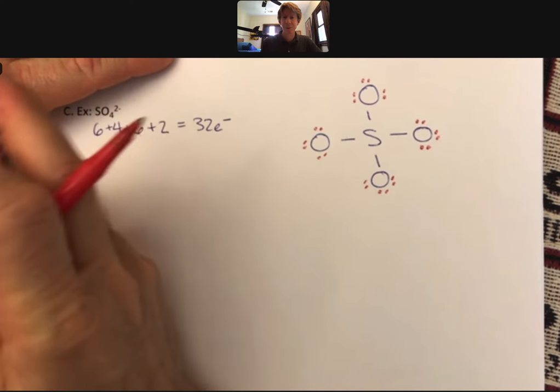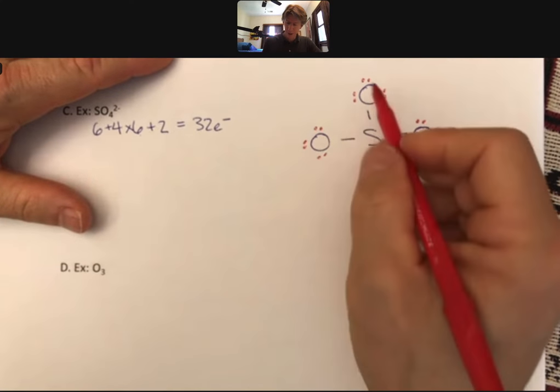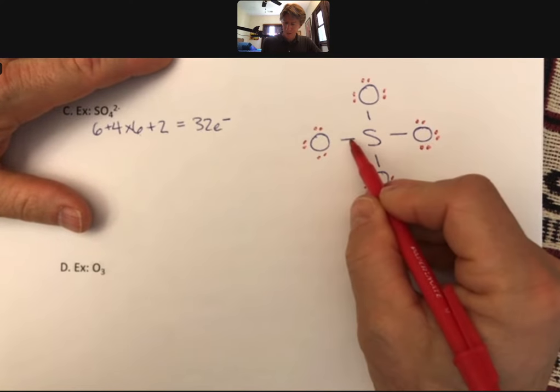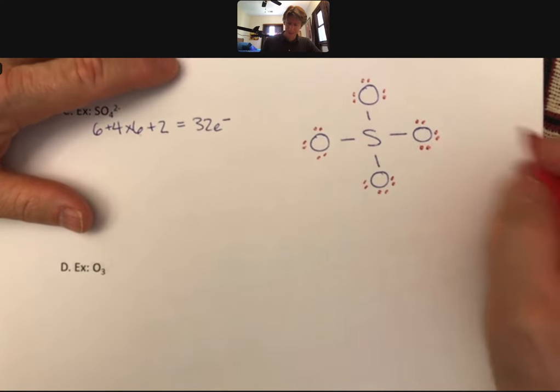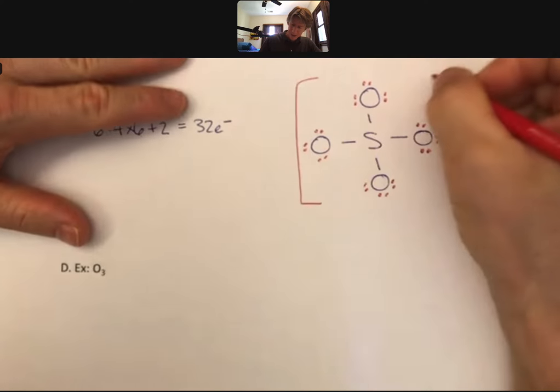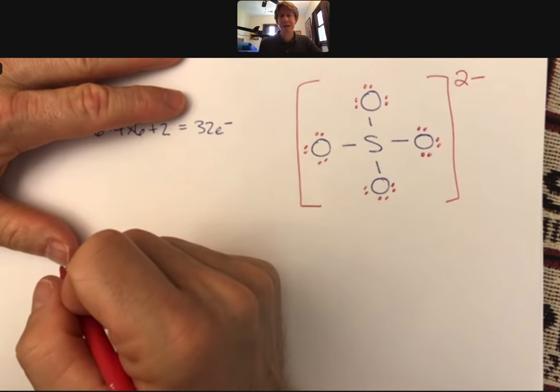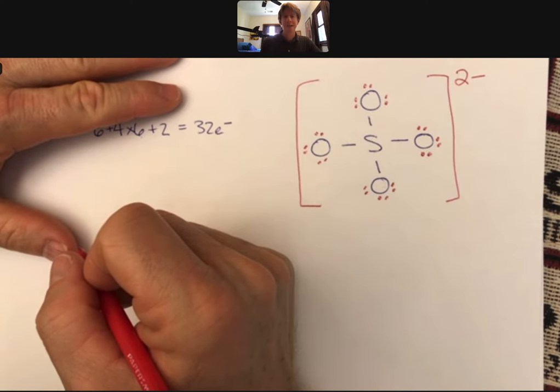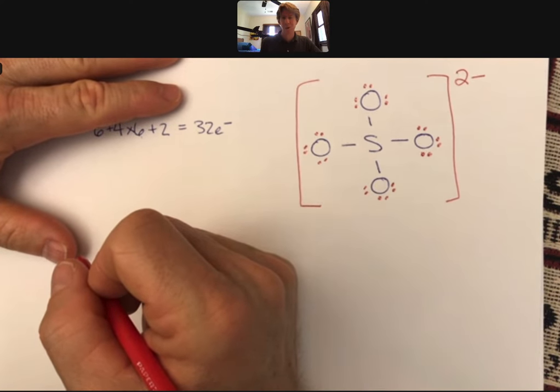And I just exactly ran out of electrons at exactly this point where all of the outside atoms had octets. Sulfur: 2, 4, 6, 8. Sulfur also has an octet. No double bonds needed. Final answer. That is the best Lewis structure for the sulfate ion. And that's the answer you should choose should you see it on a homework or an exam.